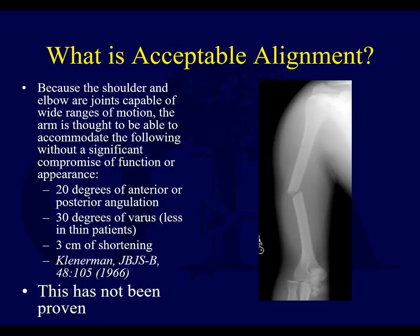You have to have what you consider to be an acceptable reduction. Because the shoulder and elbow are joints capable of wide ranges of motion, the arm is thought to be able to accommodate certain degrees of angulation and shortening as shown on the slide without significant compromise of function or appearance. These are some of the numbers often quoted, though it's fair to say this has not been proven. There was a very recent study in the Journal of Orthopaedic Trauma trying to look at how much function is lost with this degree of angulation.